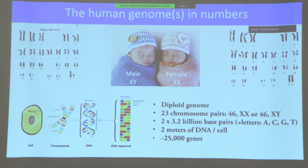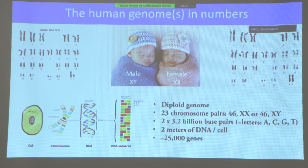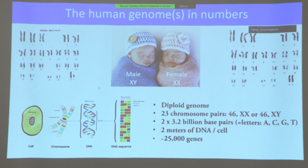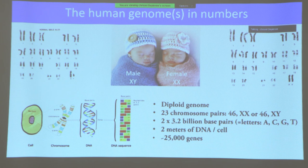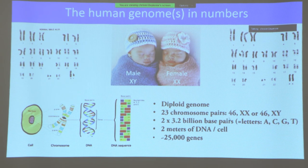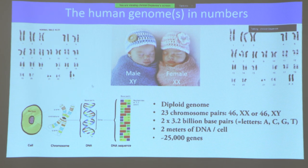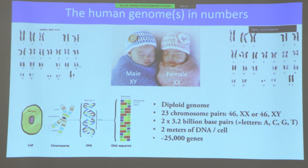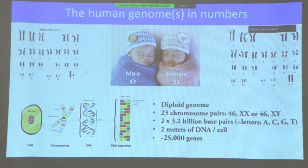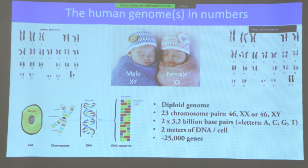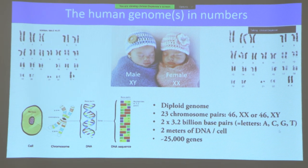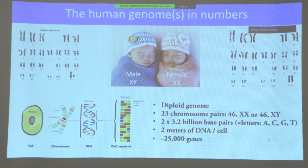Just to give you some numbers about the human genome: each individual has two complete sets of chromosomes — 23 chromosome pairs, as you can see on these slides, which are all karyotypes. All together, it represents 6 billion base pairs. Base pairs are four different letters: A, G, T, or C. Each cell has 23 pairs of chromosomes, and males and females differ in their sex chromosomes. If you unwind the DNA from one cell end to end, it would be about 2 meters of DNA, representing about 25,000 genes.